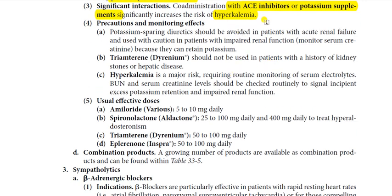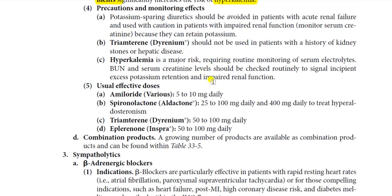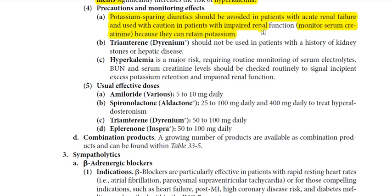Normal potassium levels should be in the range of 3.5 to 5 milliequivalents per litre. Regarding precautions and monitoring: potassium-sparing diuretics should be avoided in patients with acute renal failure and used with caution in patients with impaired renal function. Serum creatinine should be monitored because these drugs can cause potassium retention.